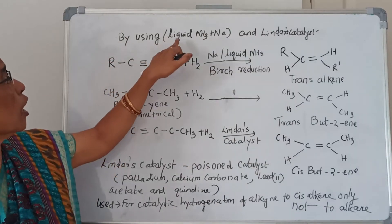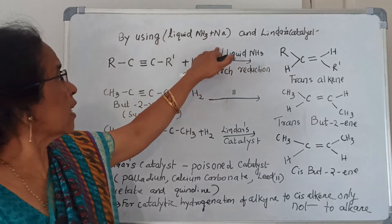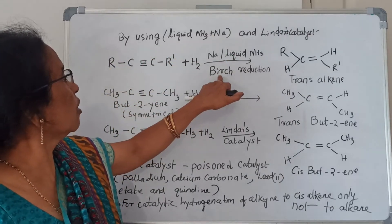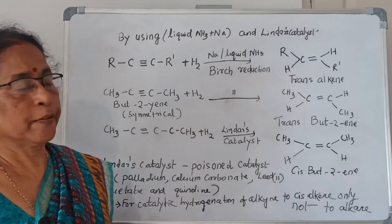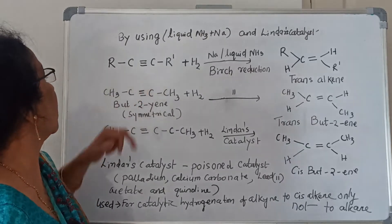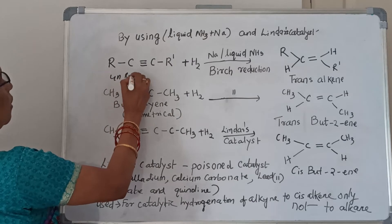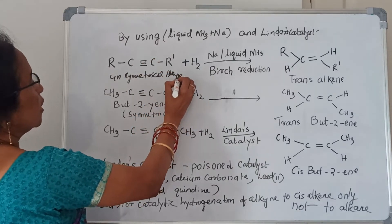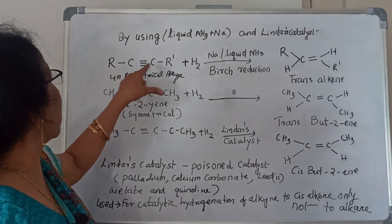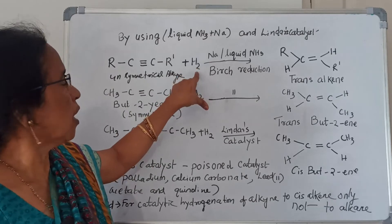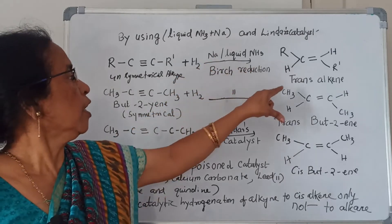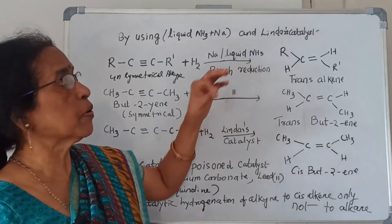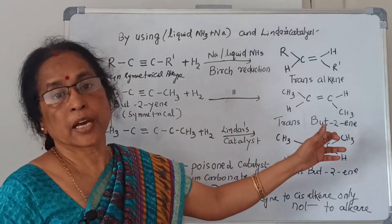From unsymmetrical alkyne, we use liquid ammonia and sodium — this is called Birch reduction — and you will get trans-alkene. So if it is an unsymmetrical alkyne and you treat it with hydrogen, sodium, and liquid ammonia, you will get trans-alkene. Also if it is a symmetrical alkyne treated with sodium and liquid ammonia with hydrogen, it also gives trans-alkene.